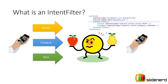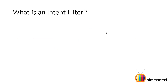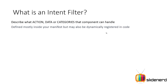Intent filters are on the receiving side of the picture. You send an intent, and that intent gets compared by the intent filter on the receiving side to check if it matches. If it matches, that activity, service, or broadcast receiver is called; otherwise, nothing happens. An intent filter describes what action, data, or categories a component can handle, and they are mostly defined inside your manifest file.